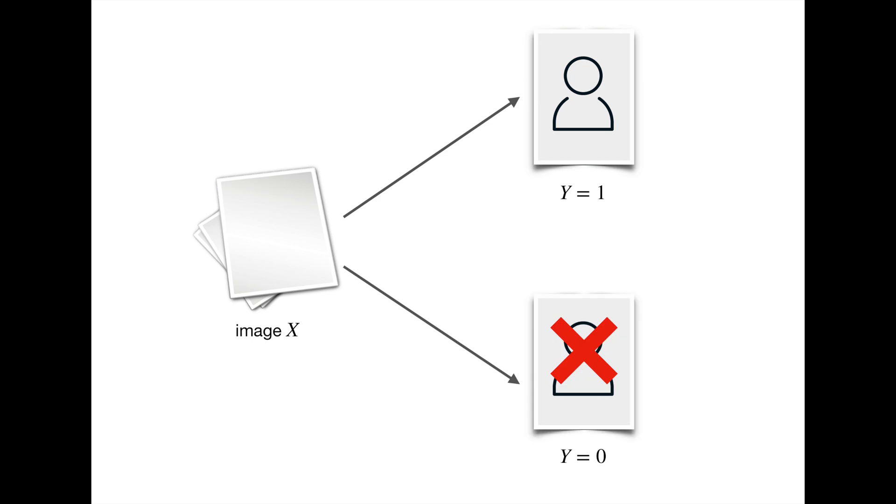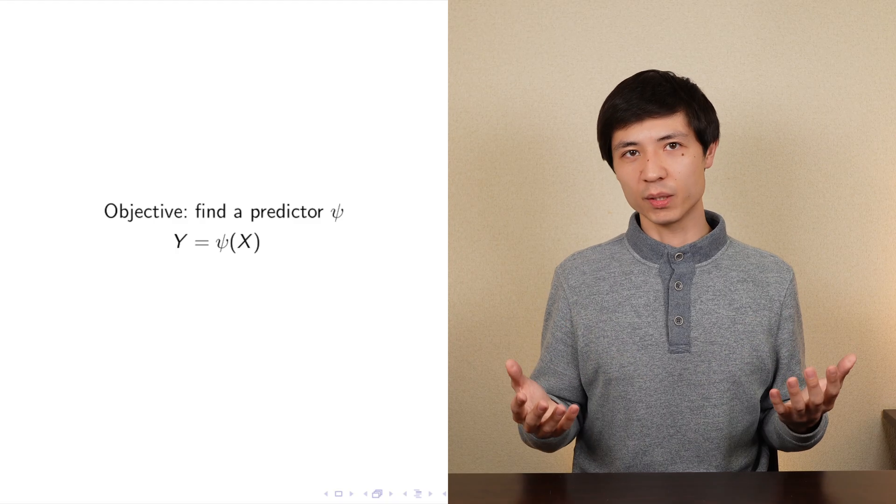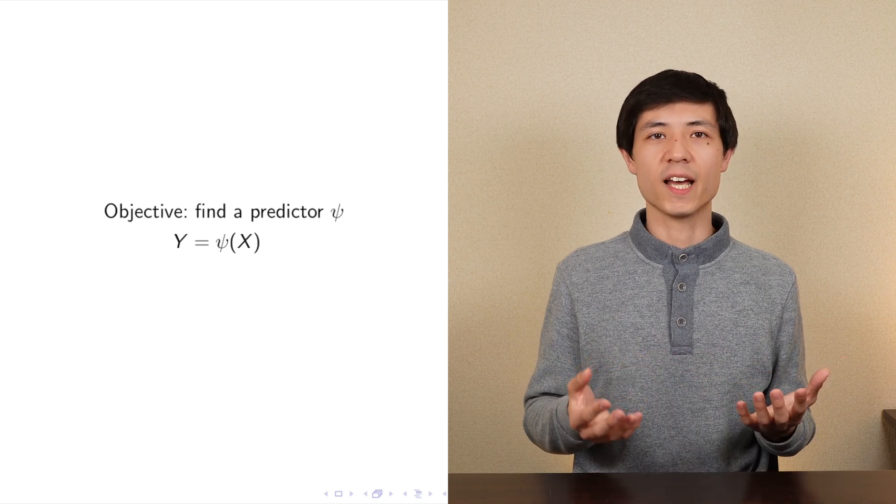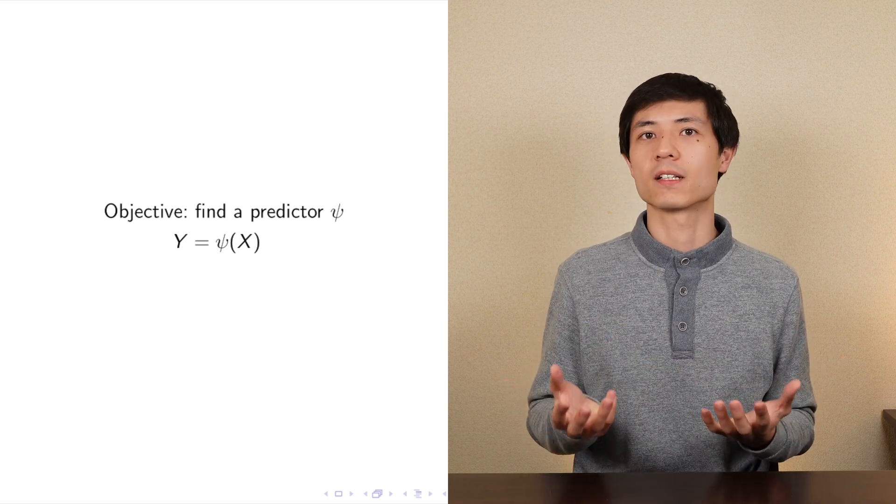Now let's see some quick background on loss functions. Take any supervised classification task. For example, the task of face detection. Given an image x, we want to predict its feature y, which is equal to 1 if there is a human face on it, and 0 otherwise. Formally, we want to find a function psi called a predictor, such that given any image x, it returns the correct label y.